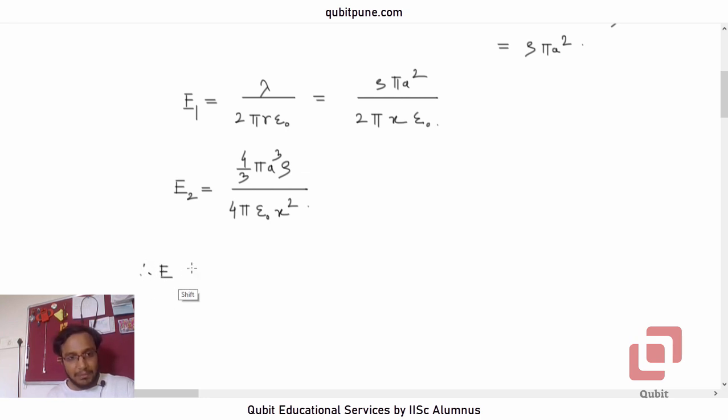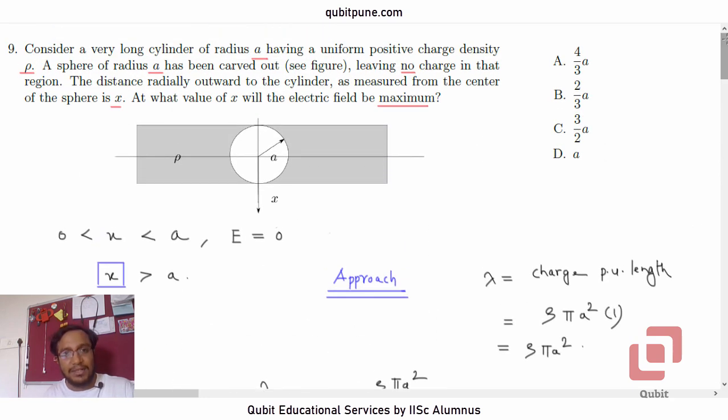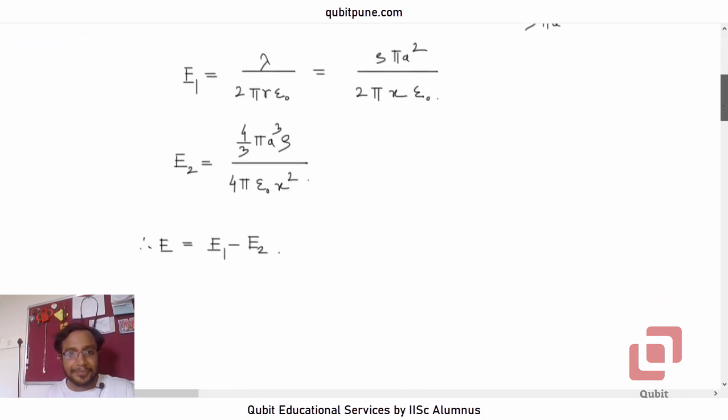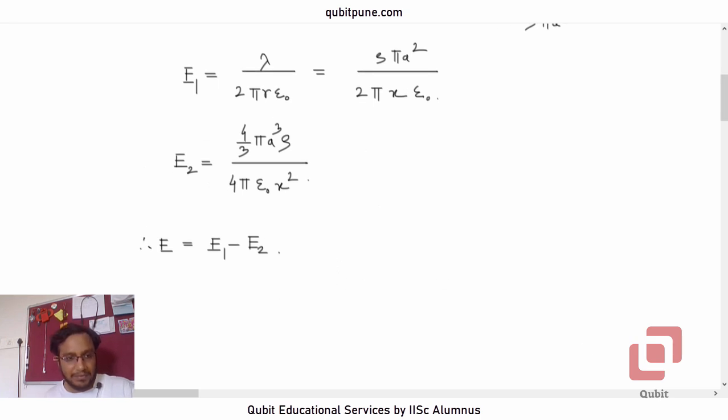So E will effectively be E1 minus E2. We are not worried about the direction because the symmetry will take care of the direction. What is E1 minus E2? Let us first cancel pi and also cancel 4.